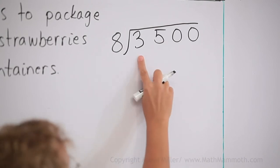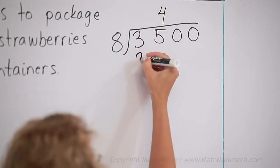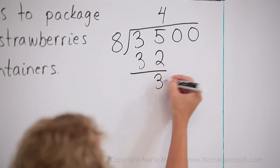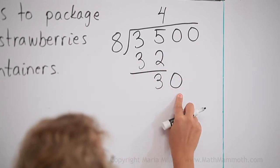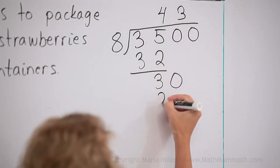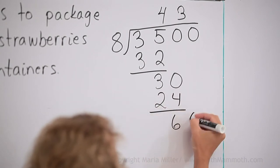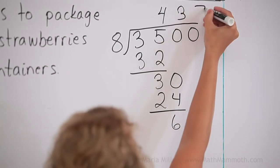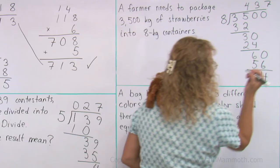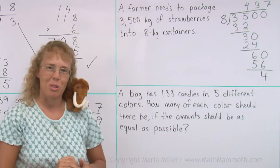8 goes into 35 four times. Subtract, and we get 30. It goes into 30 three times. And then into 60, it goes seven times. And my remainder is 4. What do those numbers mean?